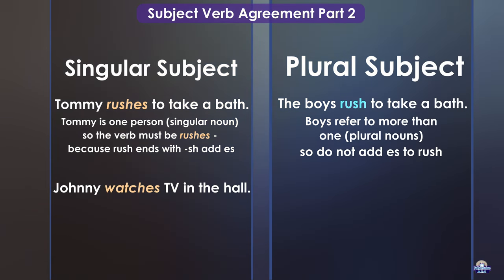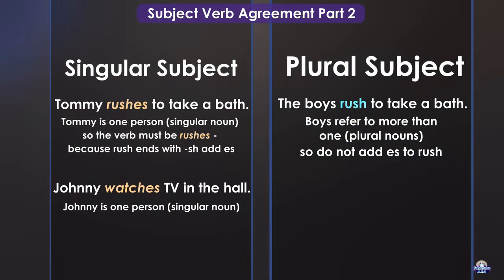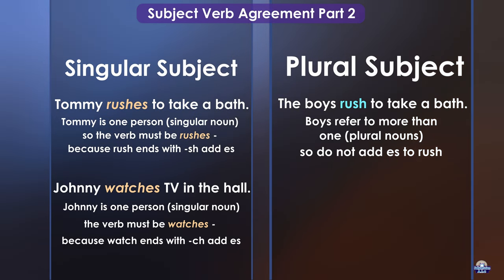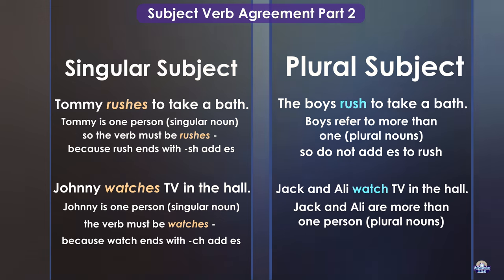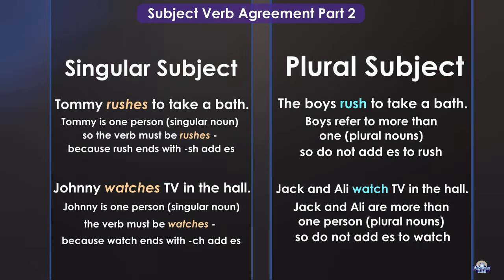Johnny watches TV in the hall. Johnny is one person, a singular noun, so the verb must be watches. Because watch ends with CH, we add ES. Jack and Ali watch TV in the hall. Jack and Ali are more than one person — plural nouns — so do not add ES to watch.